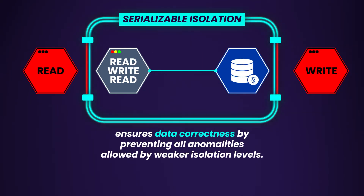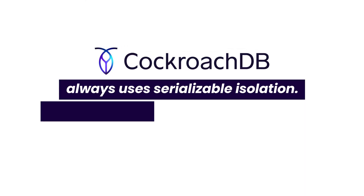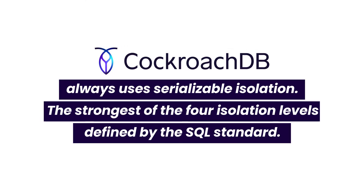These anomalies include things like dirty reads, dirty writes, and other more subtle errors you may encounter in other databases. In contrast to most databases, CockroachDB always uses serializable isolation, which is the strongest of the four isolation levels defined by the SQL standard. It is a higher level of isolation than what many legacy SQL databases offer, and it is stronger than the snapshot isolation level developed later.